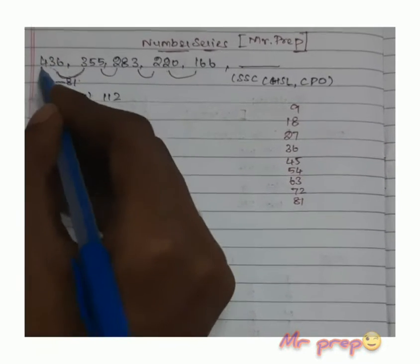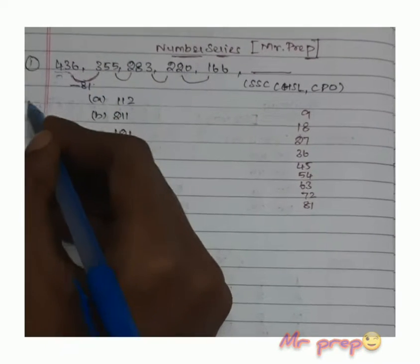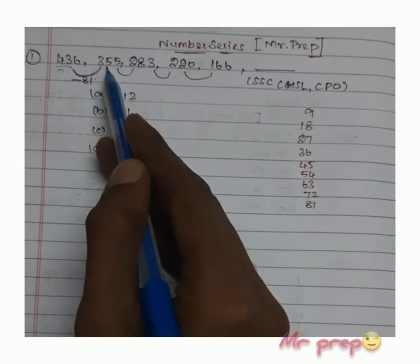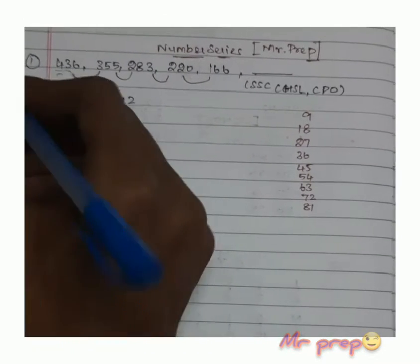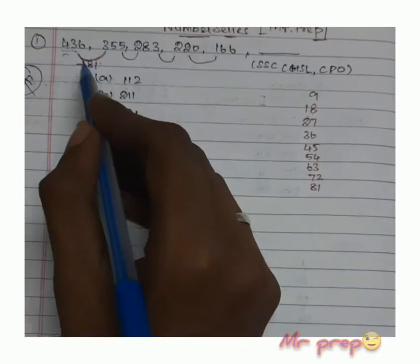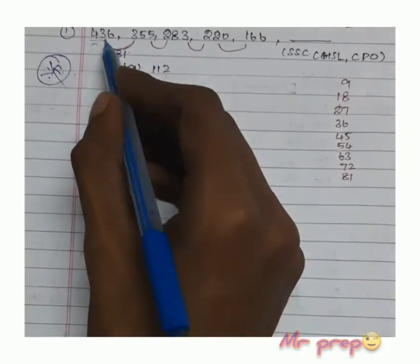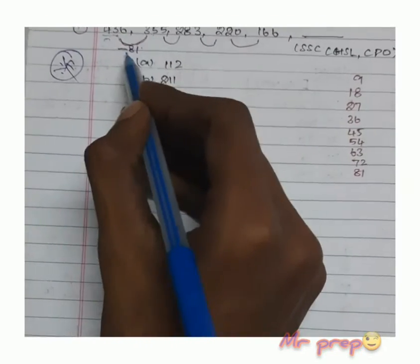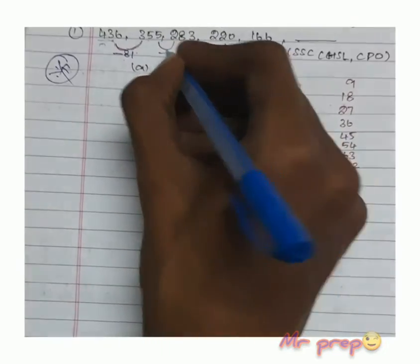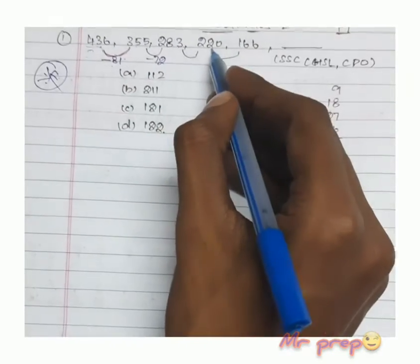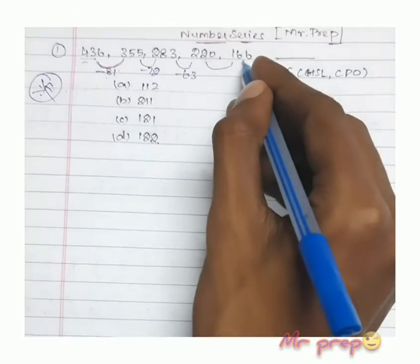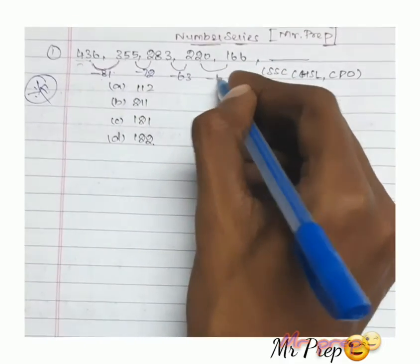For example, looking at the differences: our difference is minus 81, then minus 72, then minus 63, then minus 54. So we can see the differences are forming a pattern.